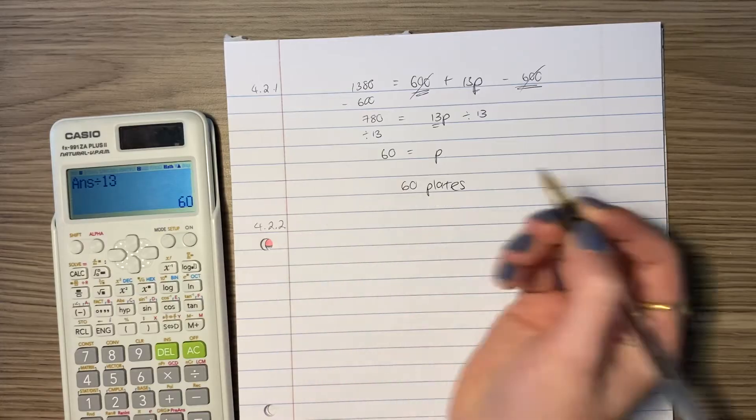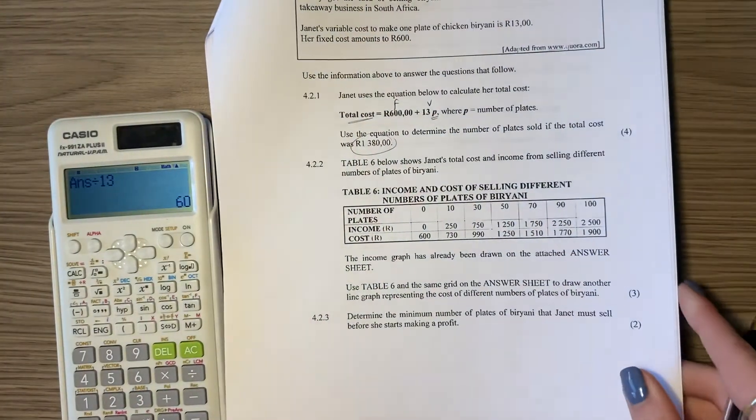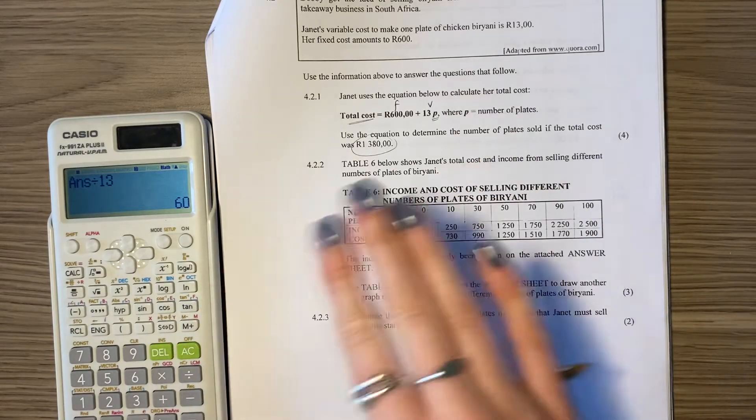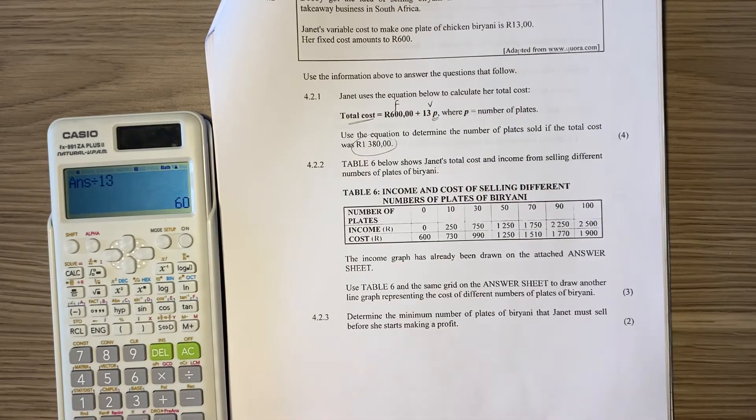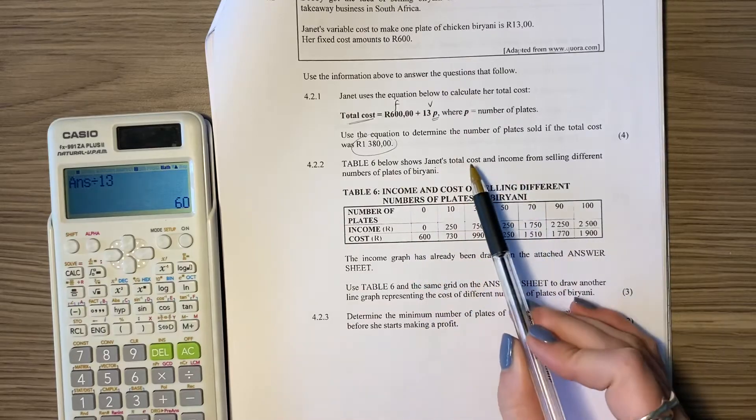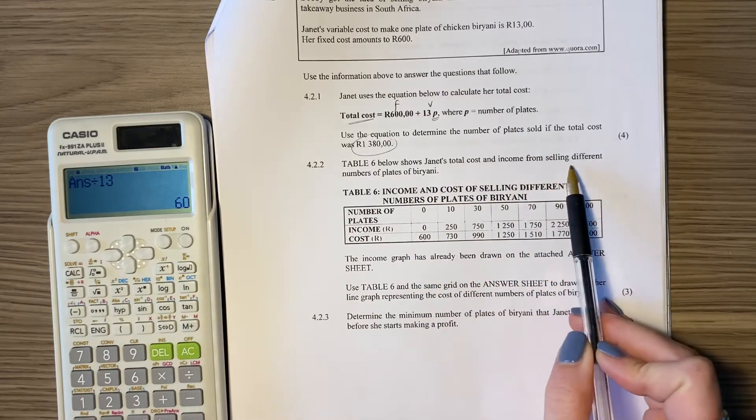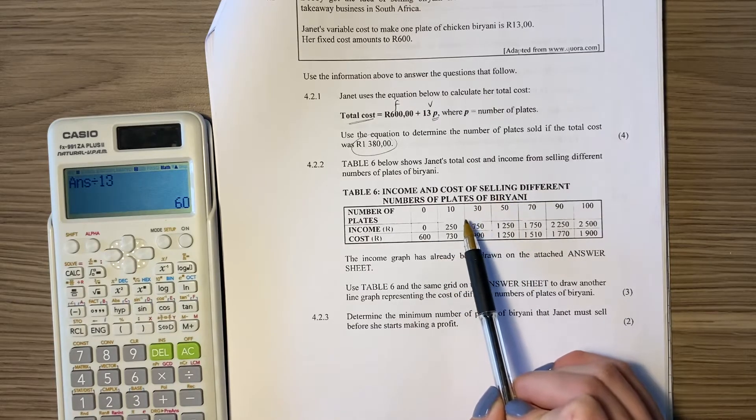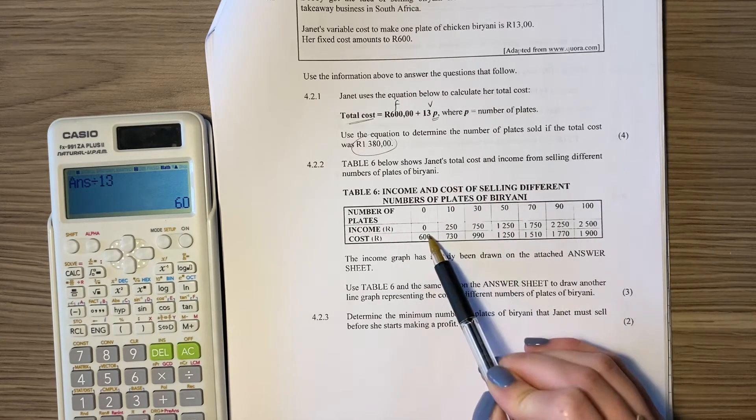The next two questions are not too difficult. A lot of it is just literally taking information and re-representing it on a graph, but let's read through it. So table six below shows Janet's total cost and income from selling different numbers of plates of briyani. So income and cost of selling different numbers of plates of briyani. There's the number of plates. There's the income.